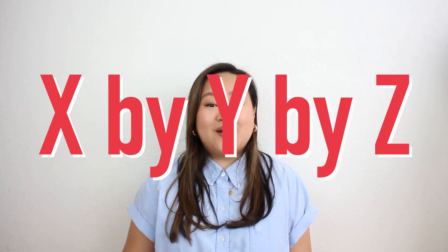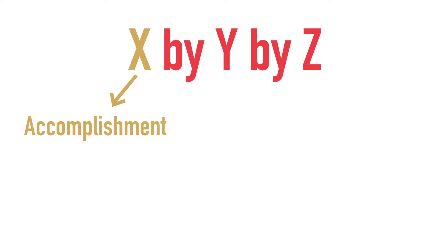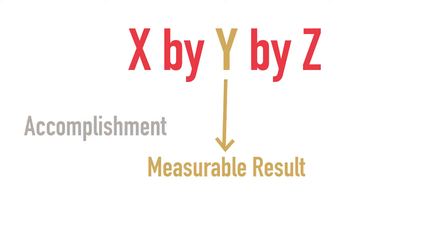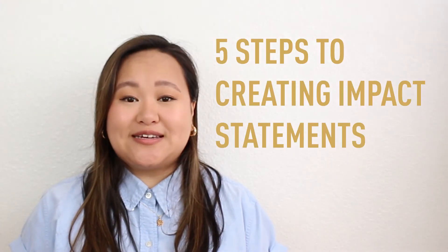To help you create your impact statements, I'm going to use the X by Y by Z formula. Here, the X is your accomplishment, the Y is the measurable result, and the Z is how you did it. Let's review five steps you can take to create impact statements using this formula.